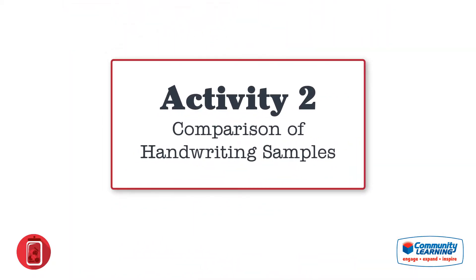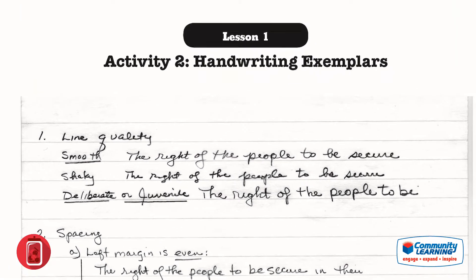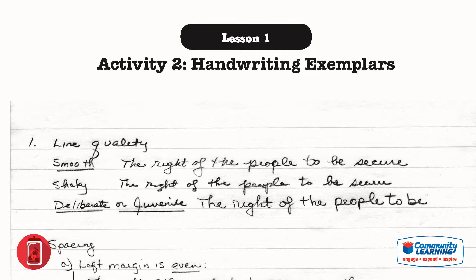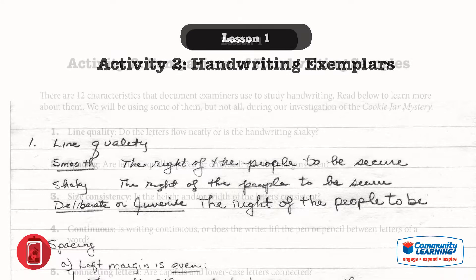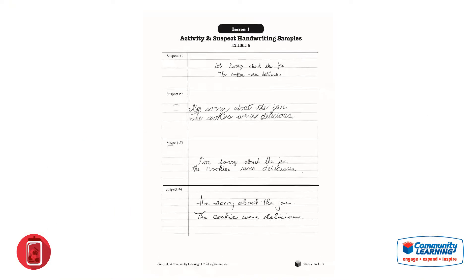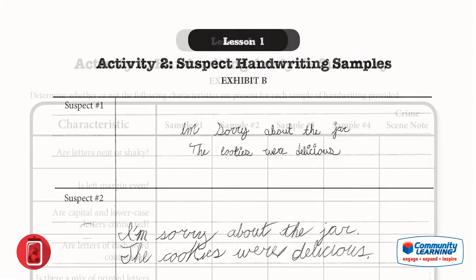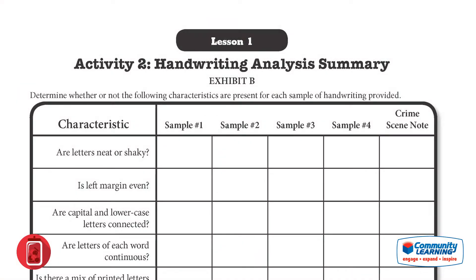Activity 2: Comparison of Handwriting Samples. By looking at the handwriting exemplars in their books, students will learn about the characteristics of handwriting that can help distinguish one person's penmanship from another's. The instructor should read aloud from the Comparison of Handwriting Samples page while students simultaneously follow along with the visual examples of each characteristic. Next, students will use this new knowledge to analyze the handwriting of each of the four suspects, using the chart found on the Handwriting Analysis Summary page to guide their analysis and organize their results.